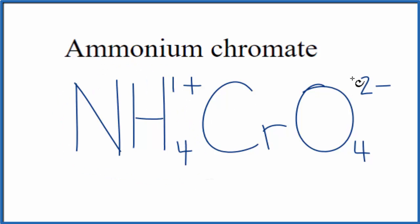This right here, 1+, and then the chromate. We have this 2- on the chromate ion. These need to add up to zero. The only way we can do that is if we have two ammonium ions. Let's put a 2 here, and then parentheses.